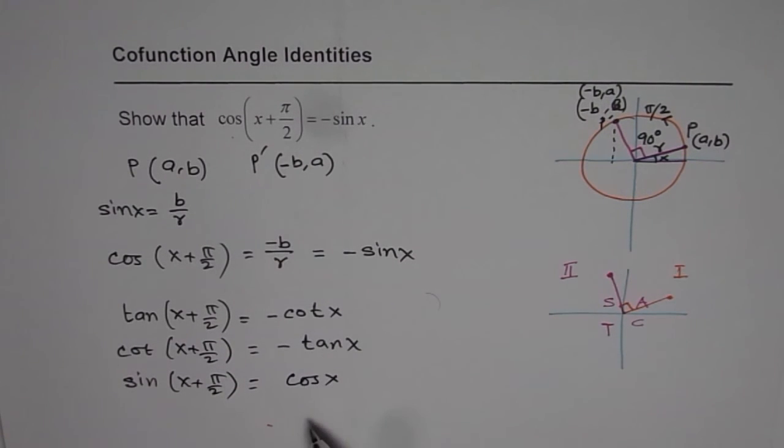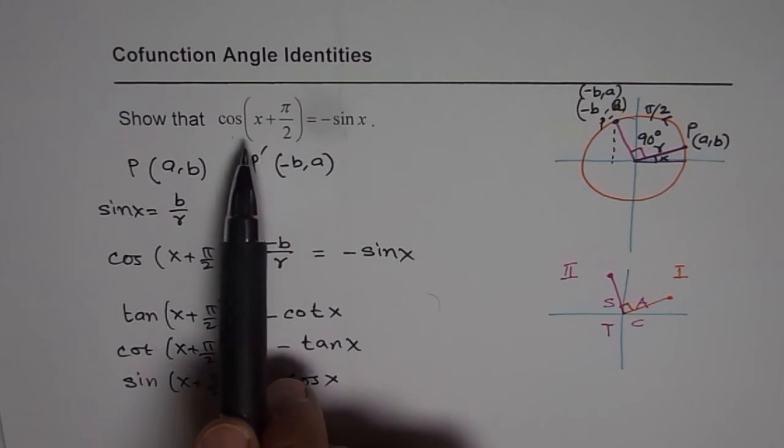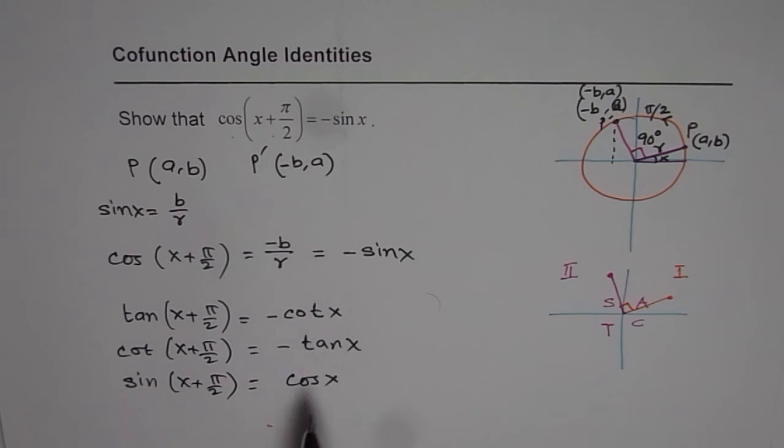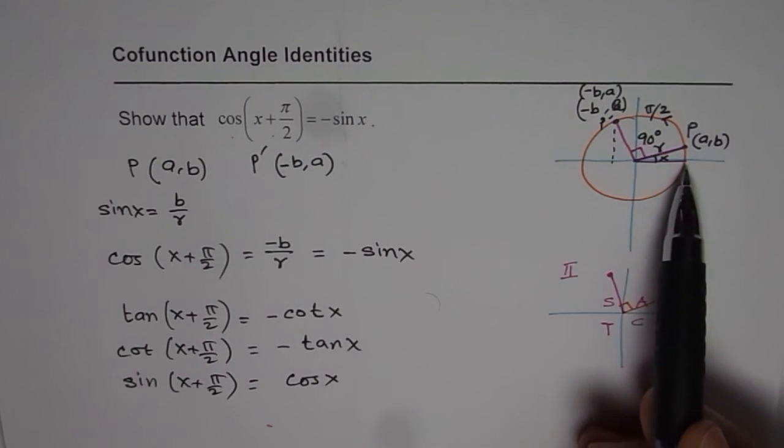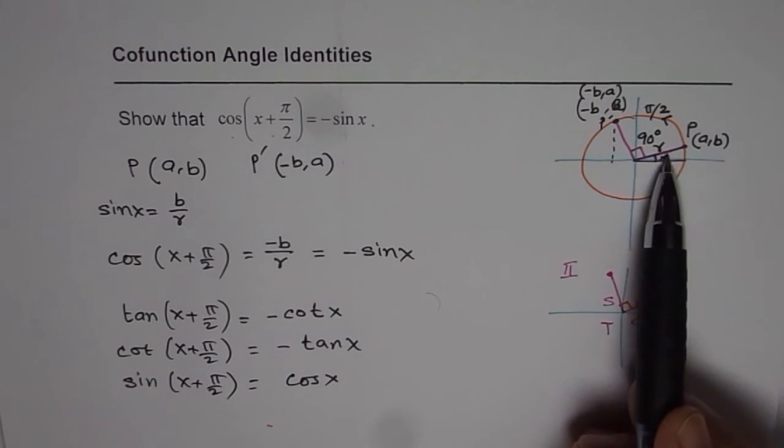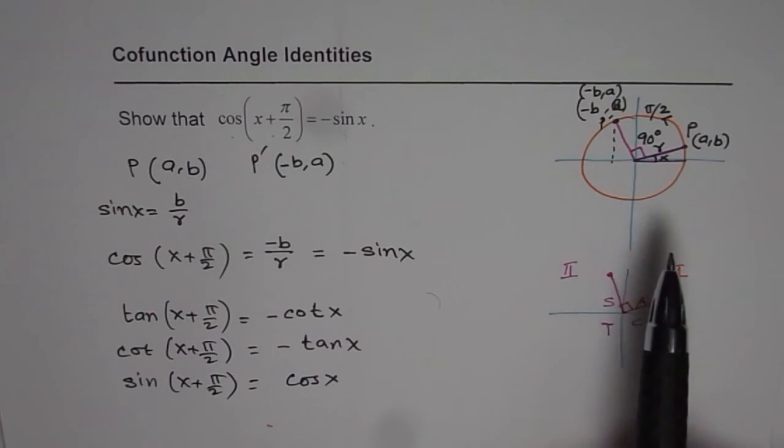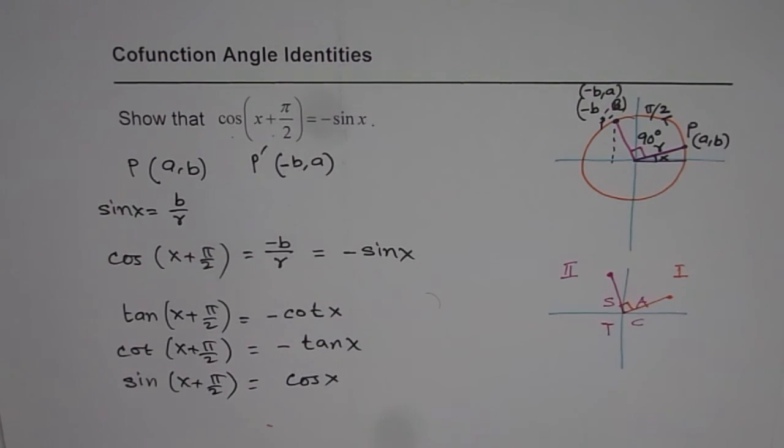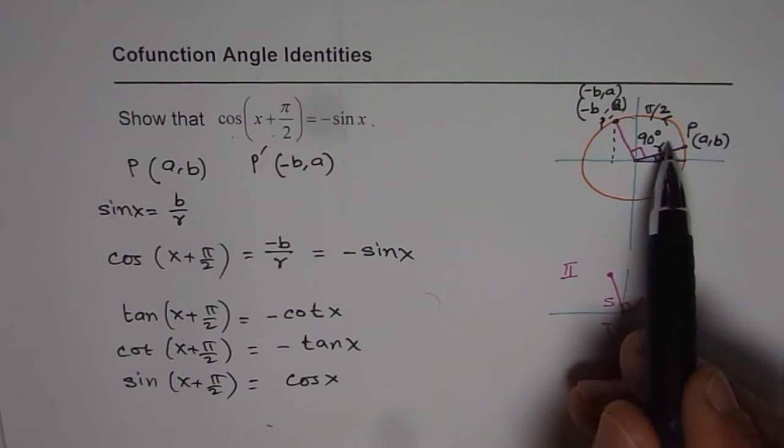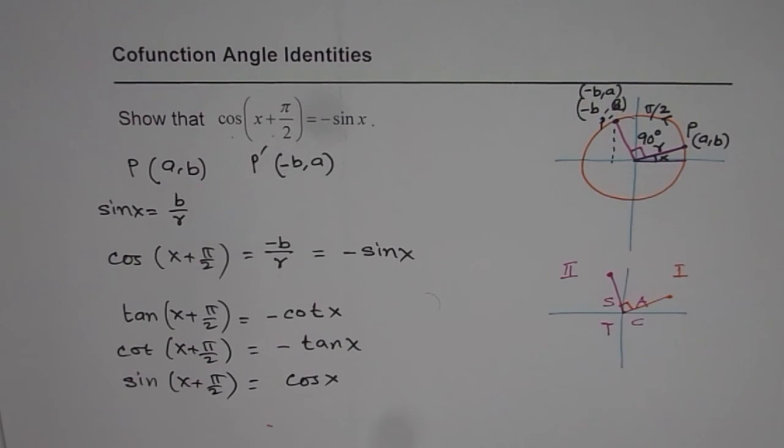So these are other related co-function identities which are very similar to one with which we started. But all can be proved in the similar fashion, using the same points a and b and the radius r of the circle. I hope that helps to understand the co-function identities for counterclockwise rotation by pi by 2 or 90 degrees. Thank you.